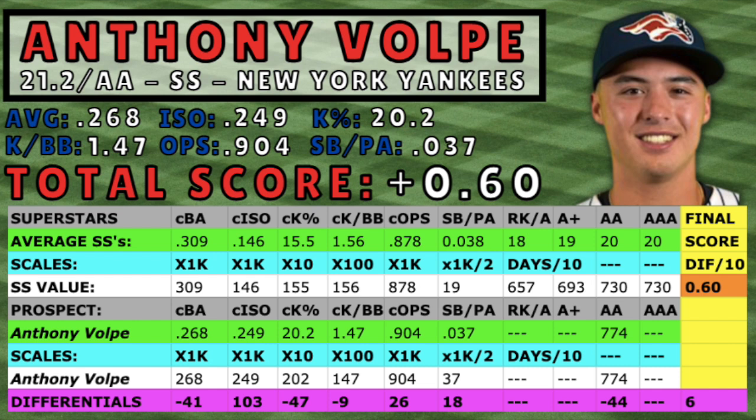Volpe had become one of the top prospects in the minors and was sent to AA Somerset to begin the 2022 season. So far this year, he hasn't been able to replicate the brilliance of the 2021 season, but he's having a solid year as a 21.3-year-old in AA. Volpe is hitting .256 with 13 home runs, 35 stolen bases, and a .200-plus ISO. His career numbers are some of the very best in the minor leagues, and as you can see from the graph, he stacks up well against today's superstars and their career minor league numbers.